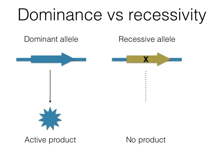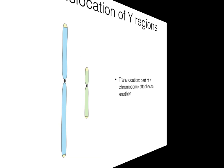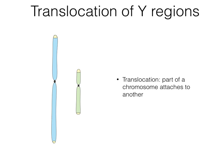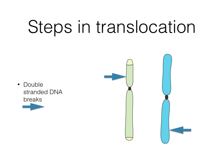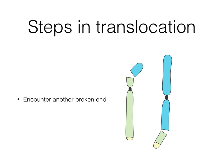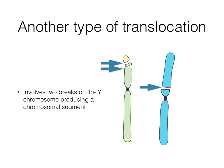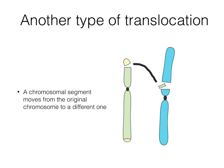Another class of chromosomal abnormalities, translocations of Y regions, provide important information. In a translocation, part of a chromosome attaches to another chromosome. Translocations can start with two double-stranded DNA breaks, one in Y and the other on an autosome. The two cut fragments float away, encounter another broken end, and are ligated together by the cell DNA repair system, resulting in a reciprocal translocation. Another type of translocation results when two breaks on the Y chromosome produce a segment that moves and is ligated to a different chromosome, resulting in a segmental translocation.